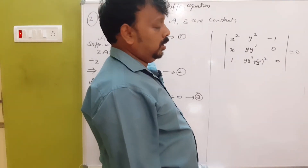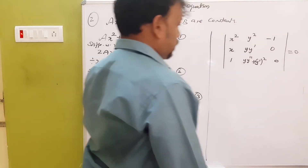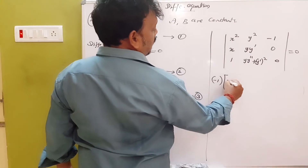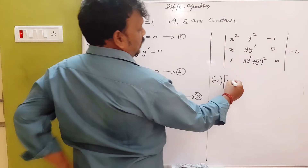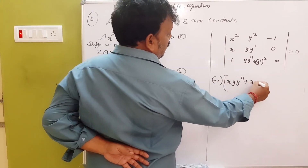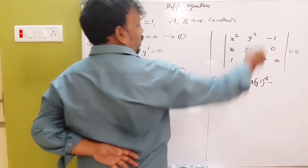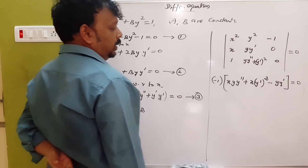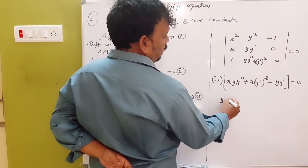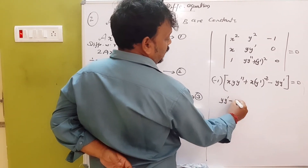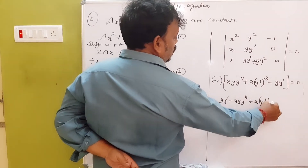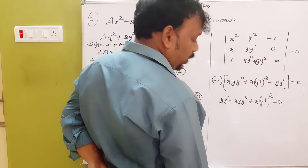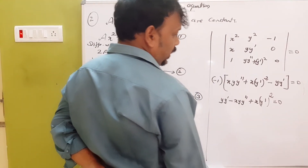We can cross the same thing. This is: x times y times y-double-dash plus x times y-dash whole squared, minus 1 times y-dash times y times y-dash, equals 0. Minus 1 equals y times y-dash whole squared equals zero. So y-dash squared equals y times y-dash equals the dimensional y times y-dash.